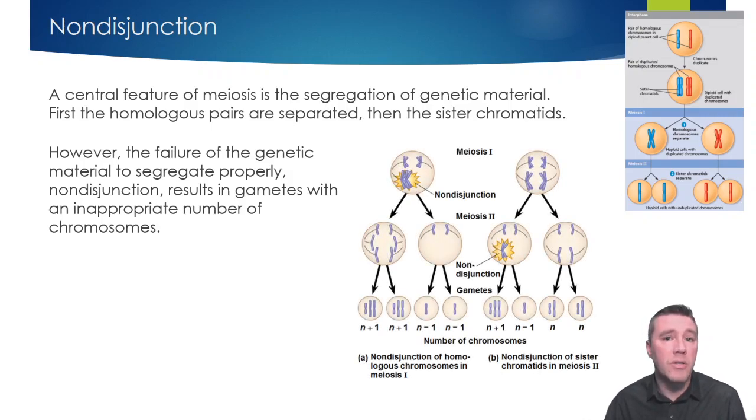This diagram illustrates the consequences of a nondisjunction error occurring in either meiosis 1 or meiosis 2. If a homologous pair fails to separate, all resulting gametes will have an improper number of chromosomes. Half of them will have an extra chromosome, and the other half will be missing one.